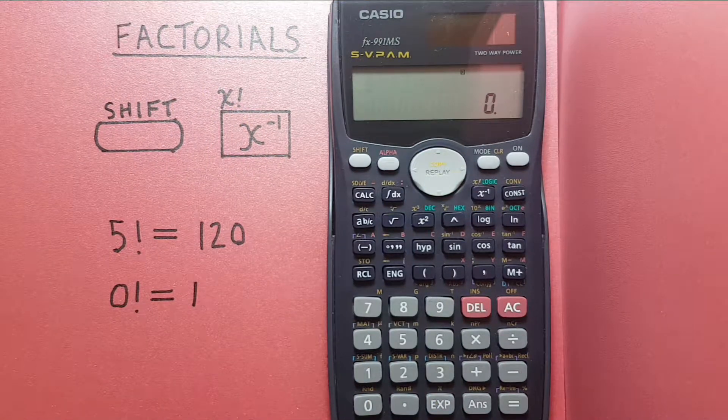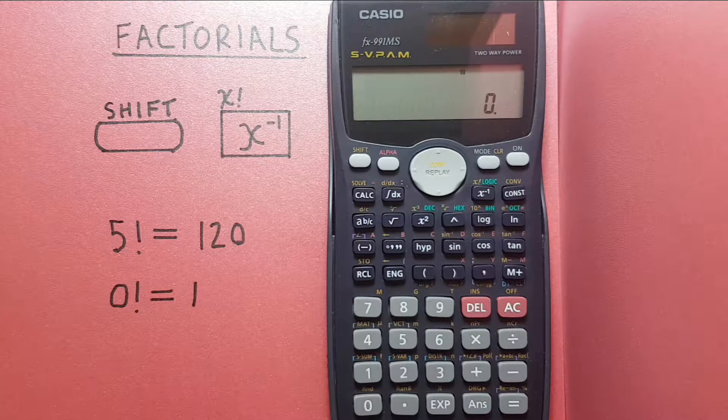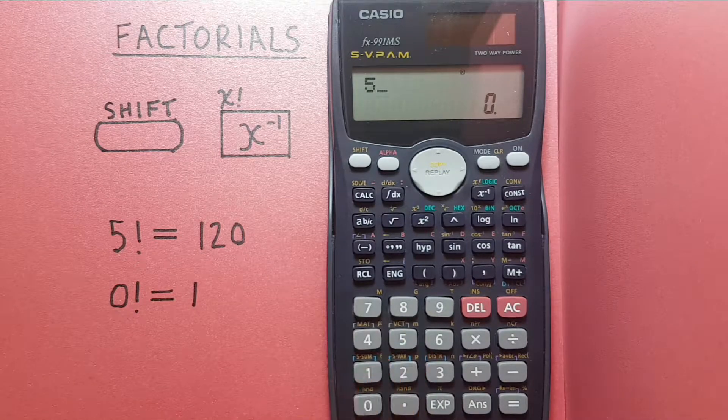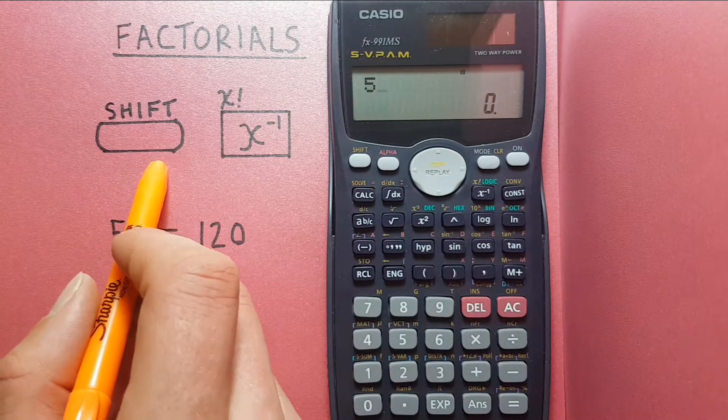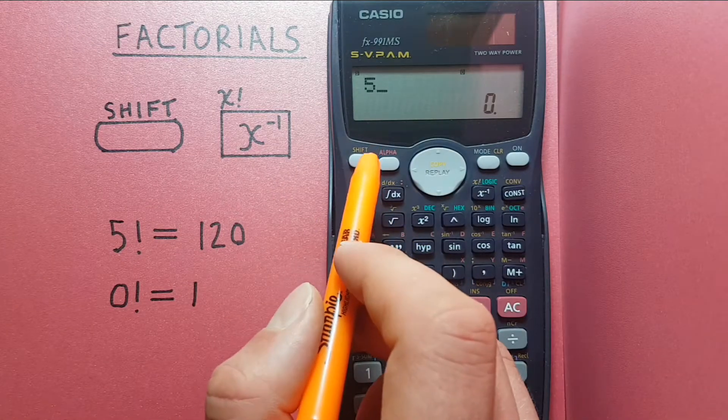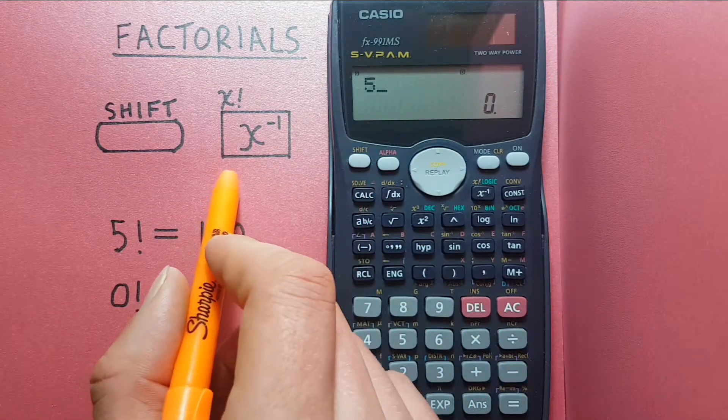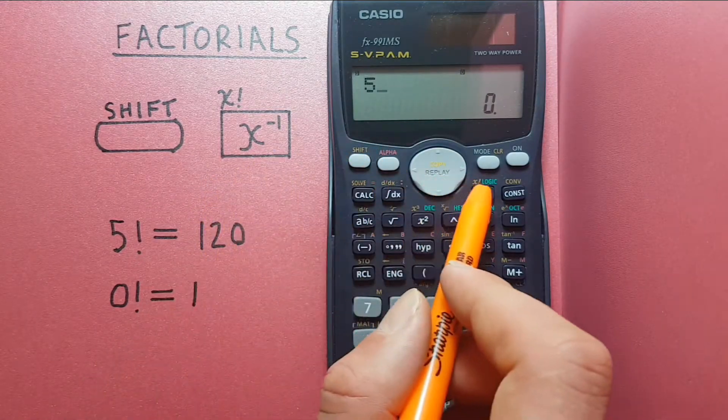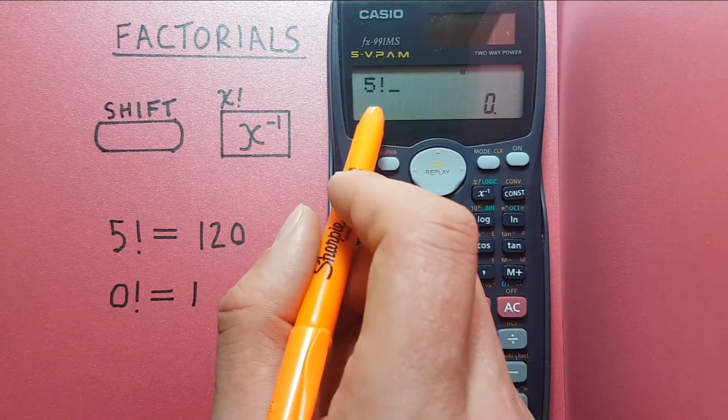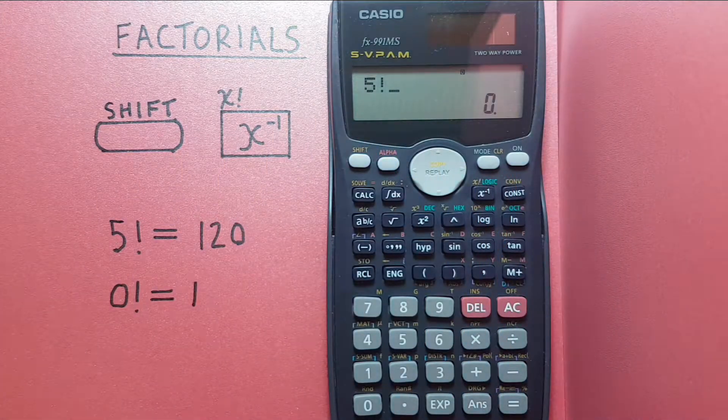If we wanted to find the factorial of 5, we would press 5 and then the shift key and then this x to the negative 1 key, and we see the exclamation mark beside the 5 letting us know it's a factorial.